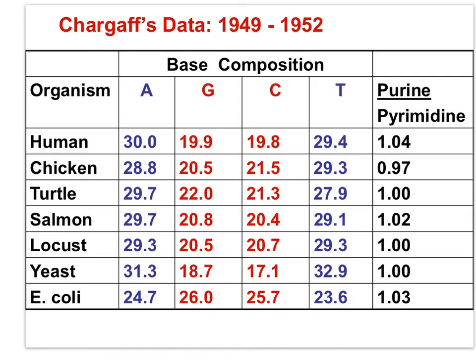From 1949 to 1952, Chargaff was working on the composition of DNA from various species and found a very interesting pattern with the bases: adenine and thymine had a one-to-one ratio within every species, cytosine and guanine had a one-to-one ratio within every species, and the purine-to-pyrimidine ratio was one-to-one for every species. You should recognize the significance of this: adenine, a purine, is always paired with thymine, a pyrimidine.